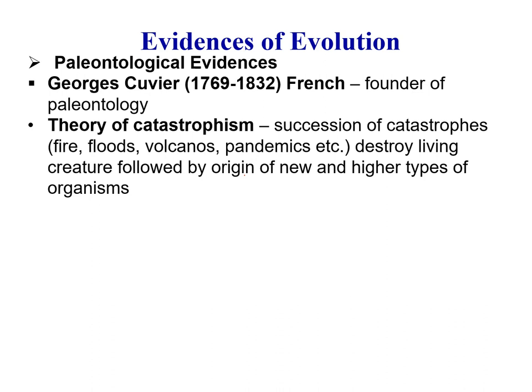Next is Georges Cuvier. He was a French scientist, regarded as the founder of paleontology, and he is famous for his theory of catastrophism. According to him, a succession of catastrophes — like fires, floods, volcanoes, pandemics, etc. — destroyed living creatures, followed by the origin of new and higher types of organisms.